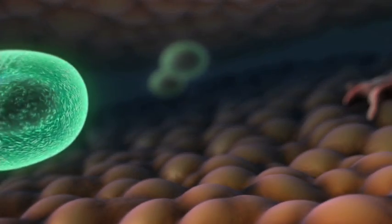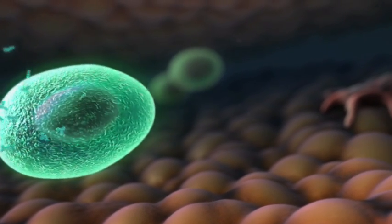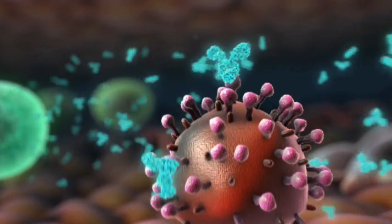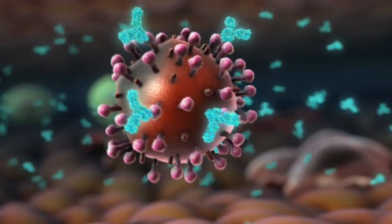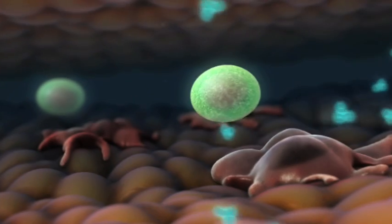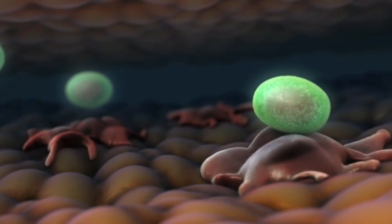Memory B cells turn into plasma cells, which produce wave after wave of the specific antibodies that latch on to HIV to prevent it from infecting cells. While squadrons of killer T cells seek out and destroy cells that are already HIV infected.